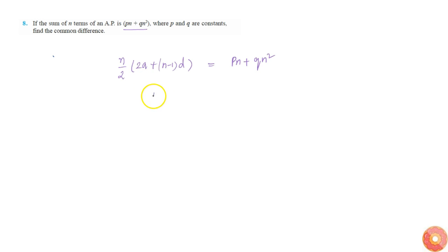So that is 2a minus d by 2 into n plus n square by 2 d is equal to pn plus qn square. Now from this we get the following equations.